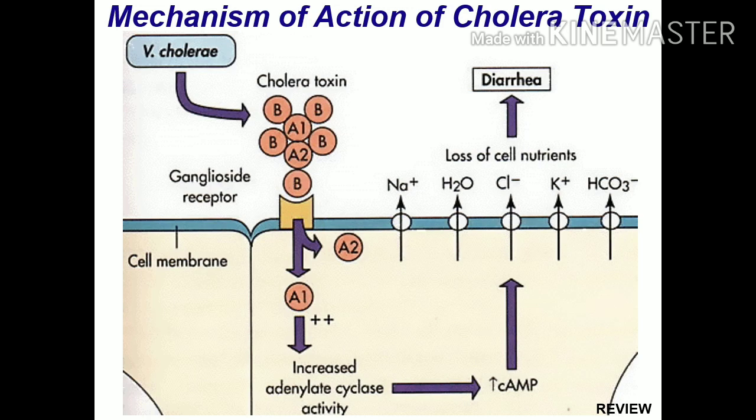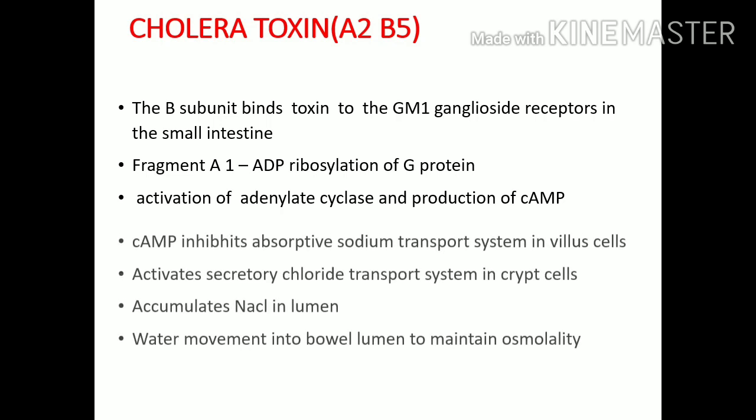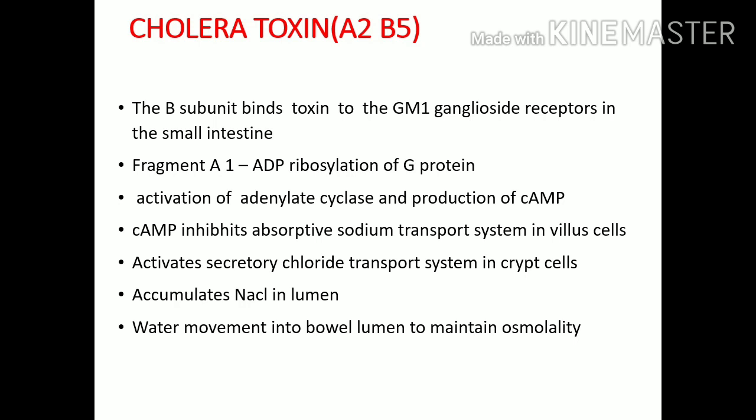The B subunit binds to ganglioside receptors and A2 binds A1 to B. Once internalized, it causes ADP ribosylation of G protein, which activates adenylate cyclase, increasing cyclic AMP. This cyclic AMP inhibits the absorptive sodium transport system in the villi of intestinal cells, preventing sodium absorption so sodium remains in the intestinal lumen. It also activates the chloride transport system, secreting chloride into the lumen. The accumulation of NaCl increases osmolarity, drawing water passively into the lumen.